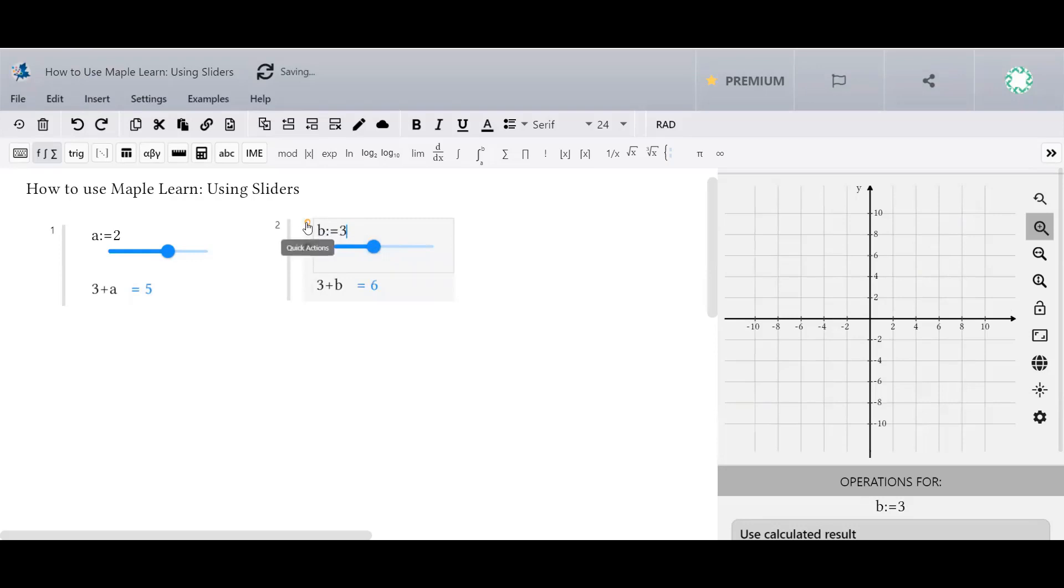To disable a slider, click on the Quick Actions menu and select Disable Slider.